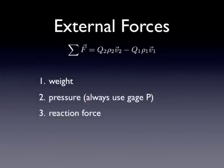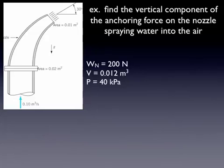This one's easier to understand by example, so I'm going to do a bunch of examples now. So this first one: we've got a nozzle that's spraying water up into the atmosphere, and it's held down right at that horizontal seam that you can see there. The question is, how much vertical force is required to hold that in place? We're given the angle, the surface areas, the flow rate, the weight of the nozzle — that's the actual metal part — the internal volume of it, and then the pressure coming in, the pressure in the pipe. Notice that it's spraying into the atmosphere, and as soon as it exits into the atmosphere, the pressure is zero.